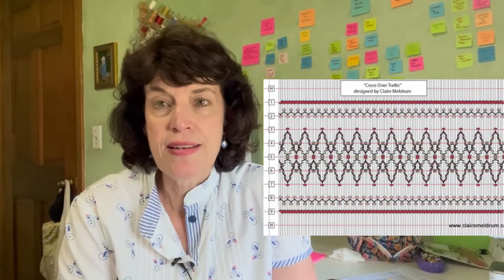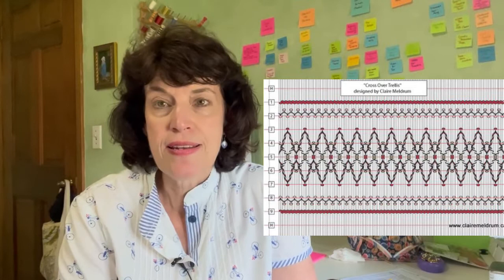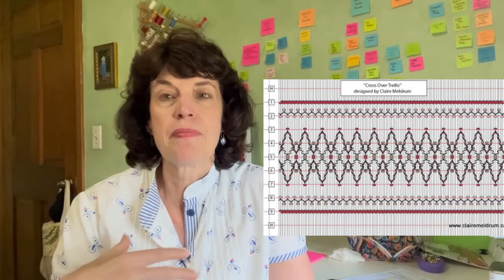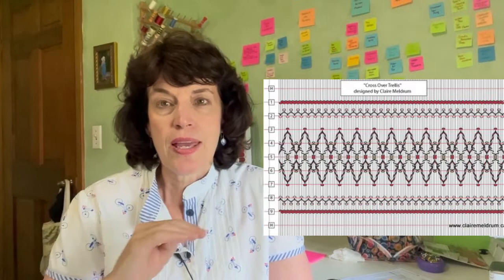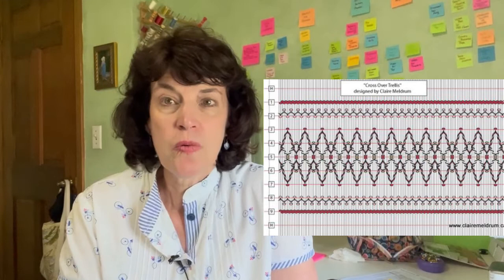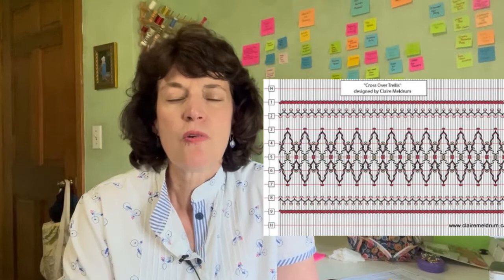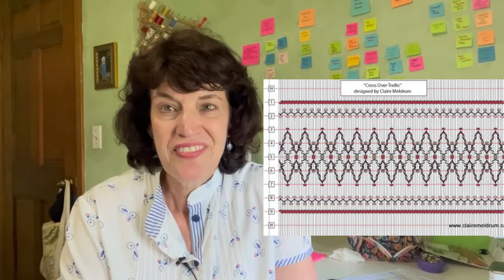Claire has another one on her site that she designed called the crossover trellis. This would be an appropriate one for a band or an insert because it's got the bottom cable rows that are pulling it in and holding it together. I think it would be a lovely one and it would work for a girl or a boy. It doesn't have lots of flowers or hearts that maybe a little boy wouldn't want. It would be great for an insert. You could use it on Johnny very easily if you want to do a pair of overalls for a boy or a girl.